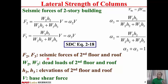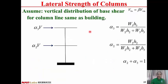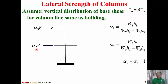The vertical distribution of the base shear for a column line is assumed to be the same as for the building. V is the base shear of the column line, distributed to the second floor and the roof. Alpha2 × V is the seismic force at the second floor, and alpha3 × V is the seismic force at the roof. The alpha values for the column line are the same as for the building, and alpha2 plus alpha3 equals 1.